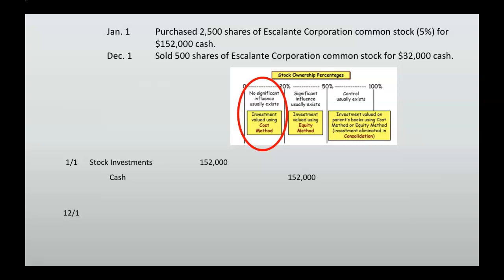Now on December 1st, you sold 500 shares for $32,000 cash. We know our cash is going up — we're getting money — and we know that our stock investments have to decrease, so we credit stock investments. There's a gap between those two entries that will come into play shortly. How much cash did you get? You got $32,000 because we sold these shares for $32,000 cash.